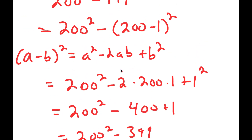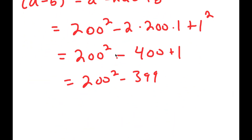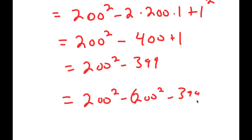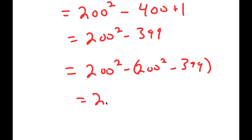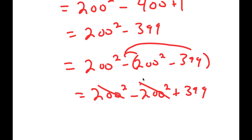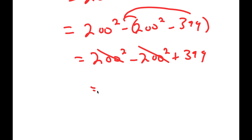That simplifies to 200 squared minus 399. Remember, we have 200 squared minus all of that expression. So we get 200 squared minus 200 squared minus 399, which equals 200 squared minus 200 squared plus 399, because we distribute the negative. Those two cancel out, so all I'm left with is 399.